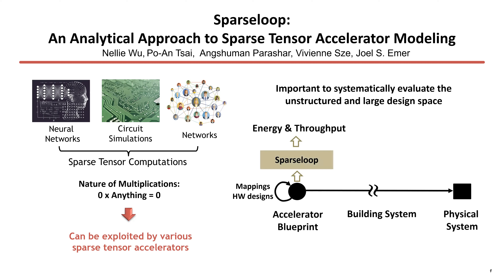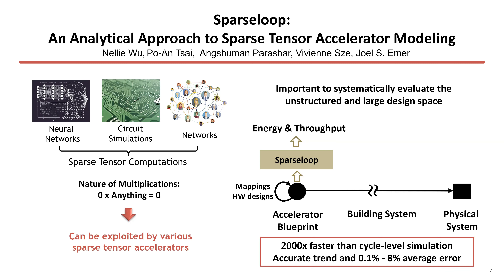To allow fast modeling and enable rapid design space exploration, we propose Sparse Loop, which allows designers to evaluate various mappings and hardware designs at an early stage without spending a long time to build a hardware system. We are able to achieve more than 2000x faster modeling speed compared to cycle-level simulations, maintain hardware performance trends, and achieve 0.1% to 8% average error on energy consumption and processing speed across various well-known designs.